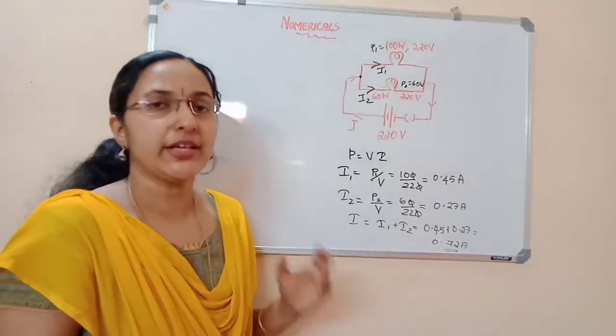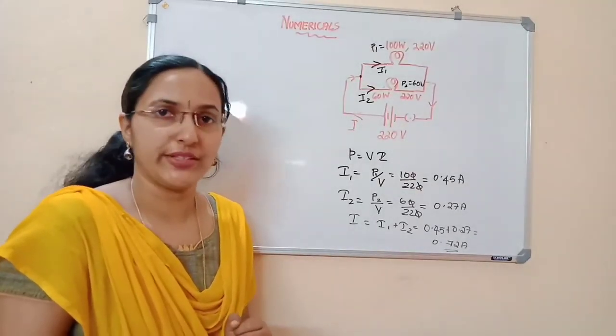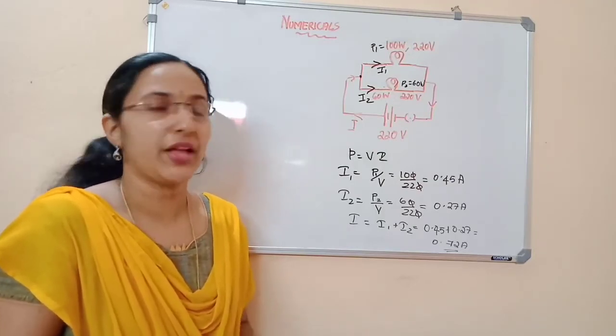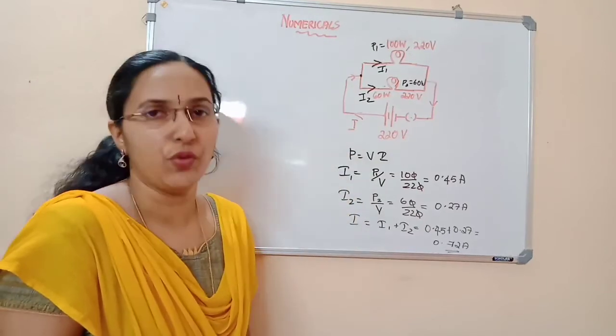So once more, I will explain. Here, two bulbs are connected in parallel to each other—one is rated 100 watt and another is rated 60 watt—and it is connected to a 220 volt main.